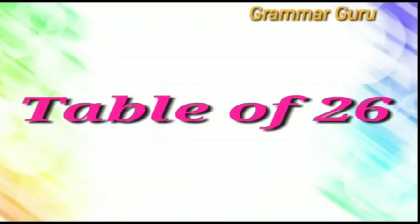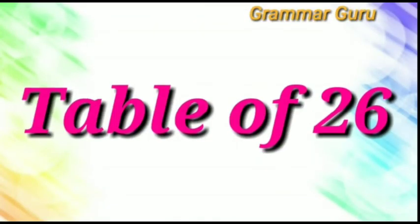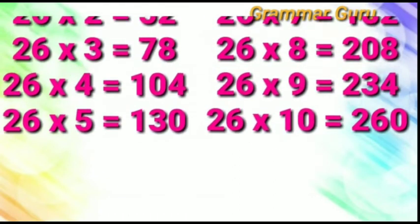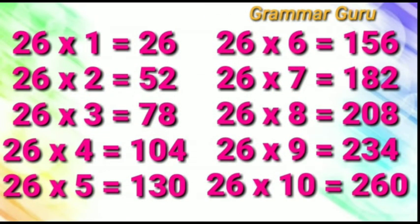Today we are going to learn the table of 26. 26 1s are 26, 26 2s are 52, 26 3s are 78, 26 4s are 104, 26 5s are 130.